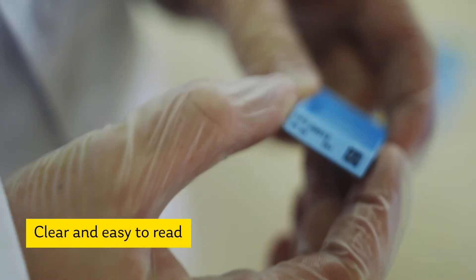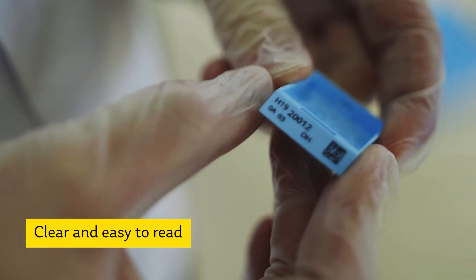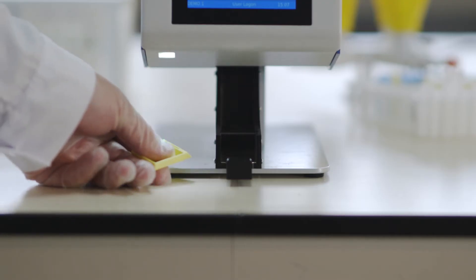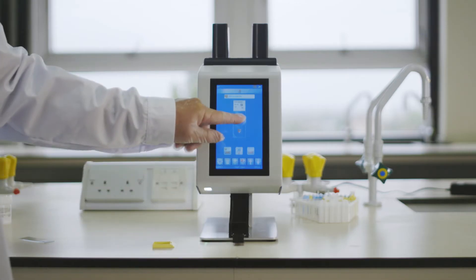A printer that prints clear, easy to read text and barcodes directly onto the cassette. The data can be scanned into the smart slide printer.